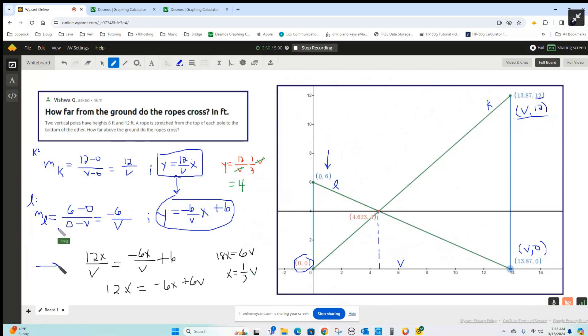How do you solve that equation for X, which would be the X-coordinate of this point? Multiply every term by V to clear the equation of fractions is how I would do it. 12X equals negative 6X plus 6V.